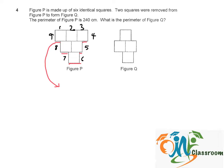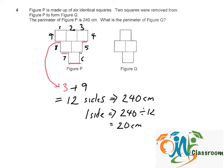So now we have 3 plus the 9 that we previously calculated. Altogether, 12 square sides gives us 240 cm. So one side will give us 240 divided by 12 equals 20 cm.